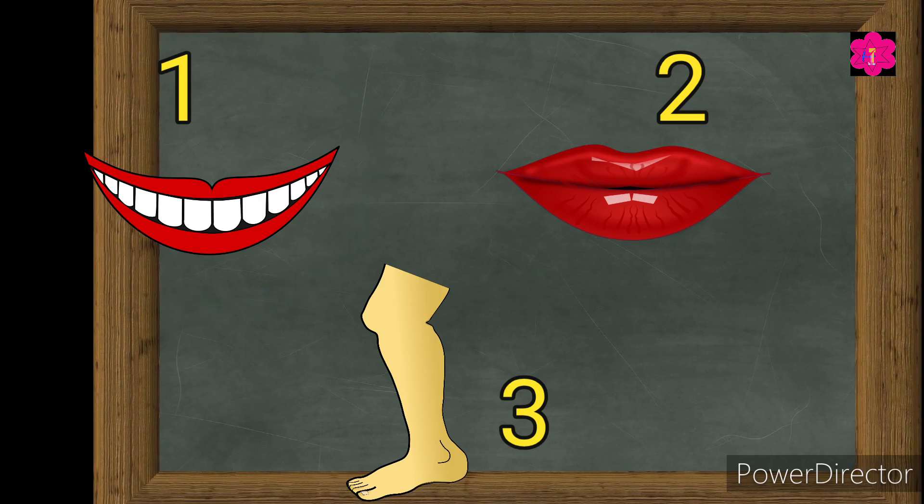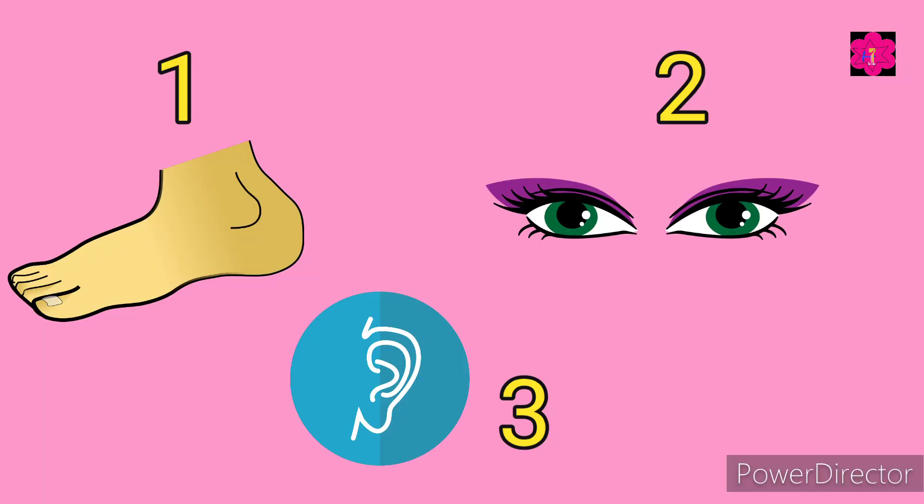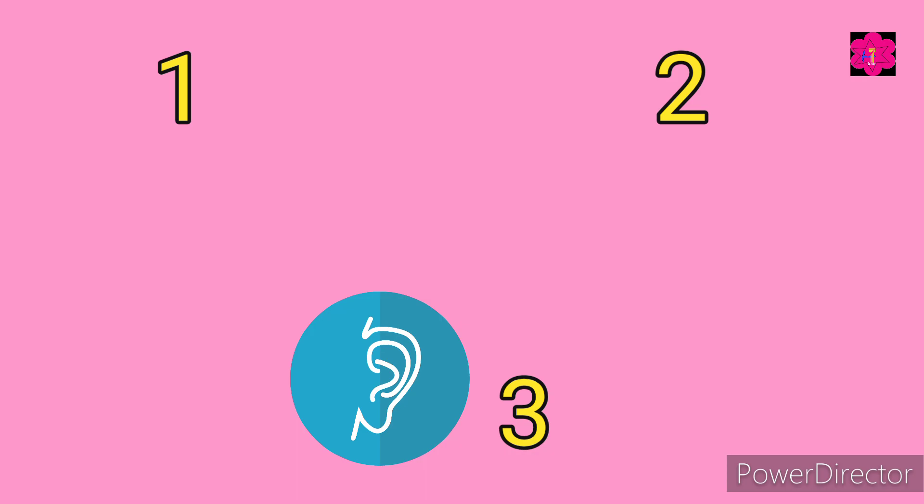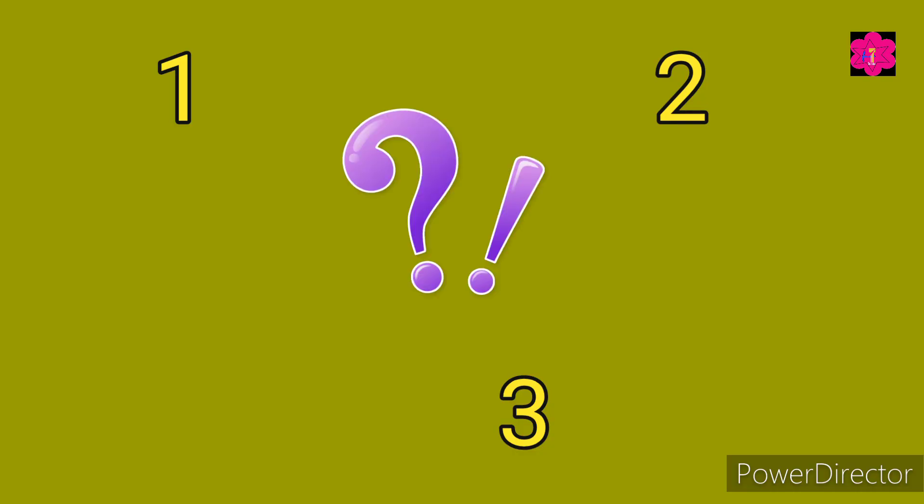Number one. Okay, on number one foot is there, eyes on number two, and the ear is on number three. Now I am going to hide. Okay kids, now guess, eyes are on which number?